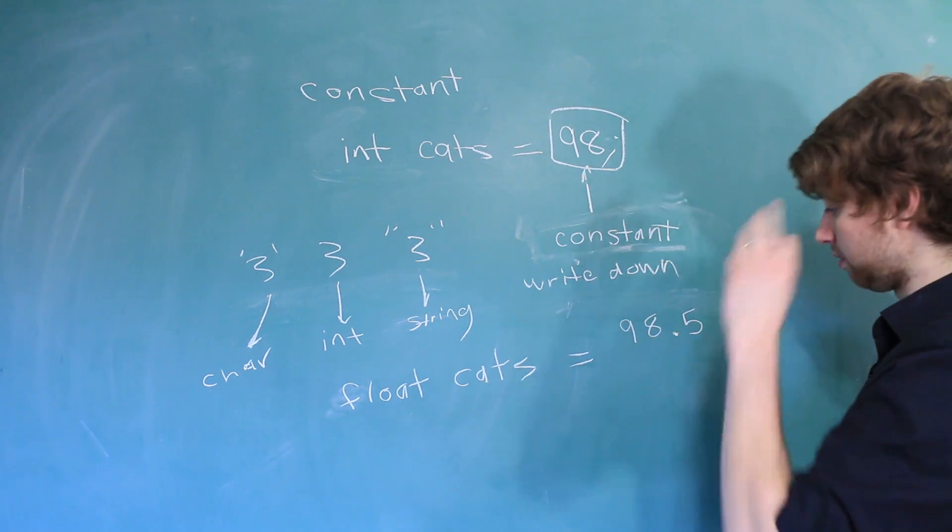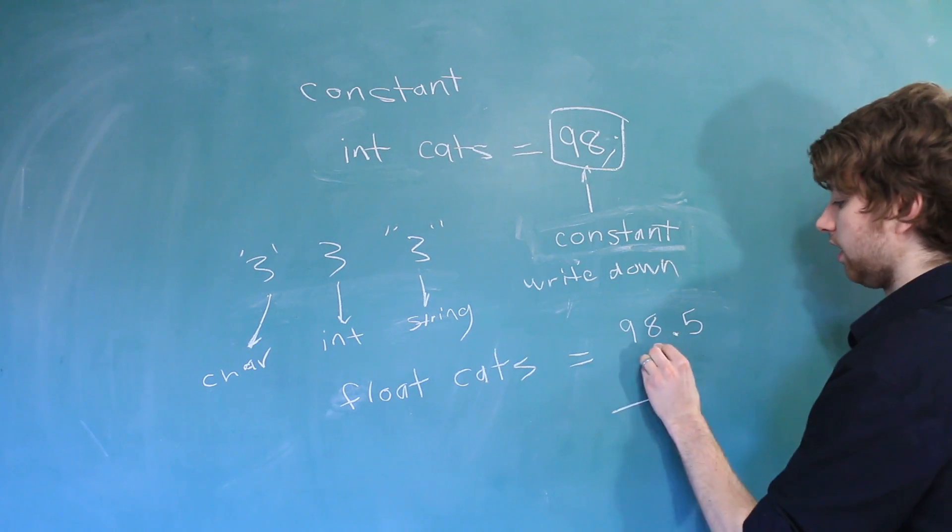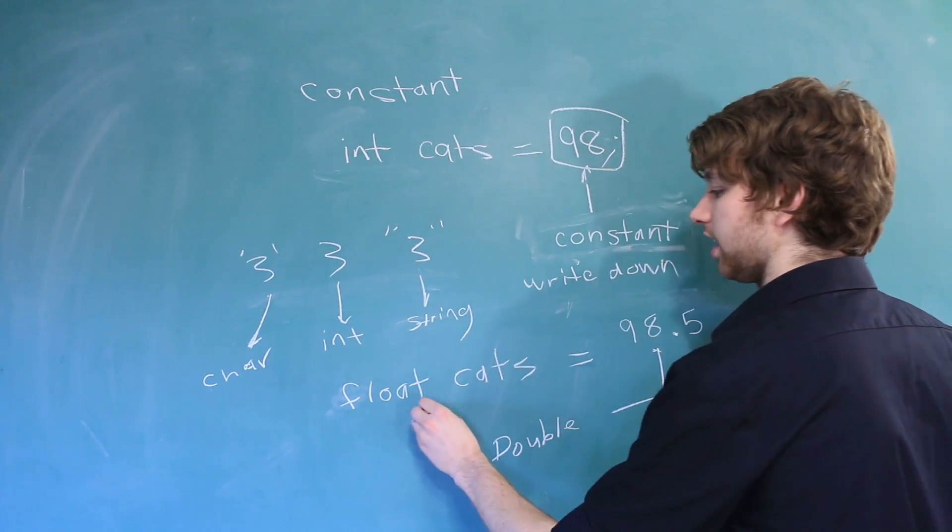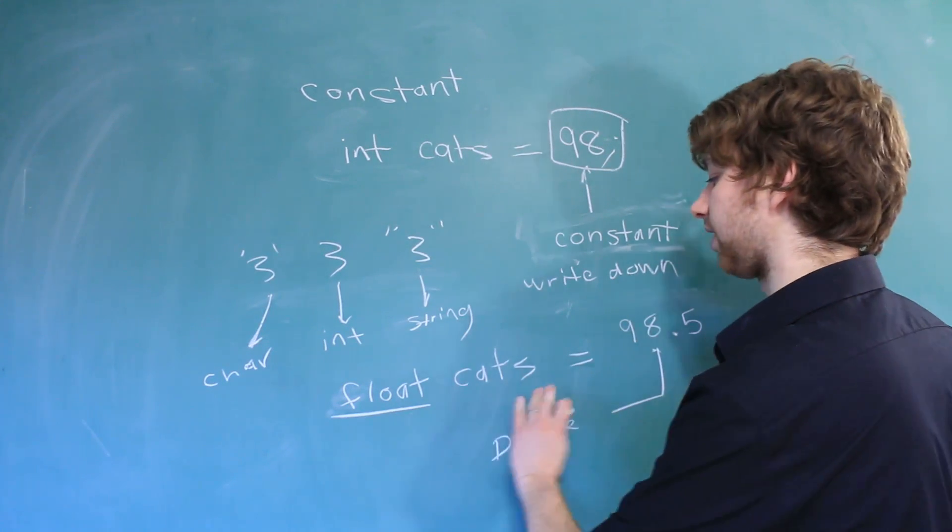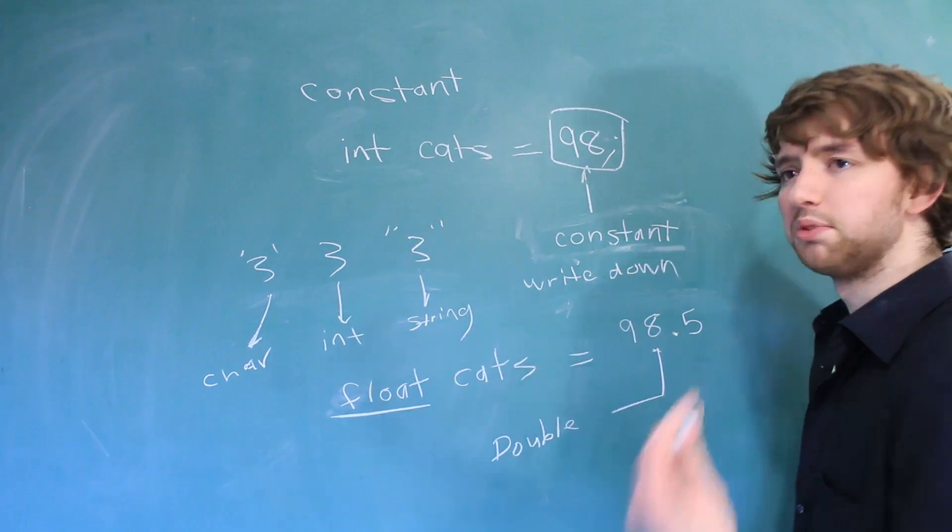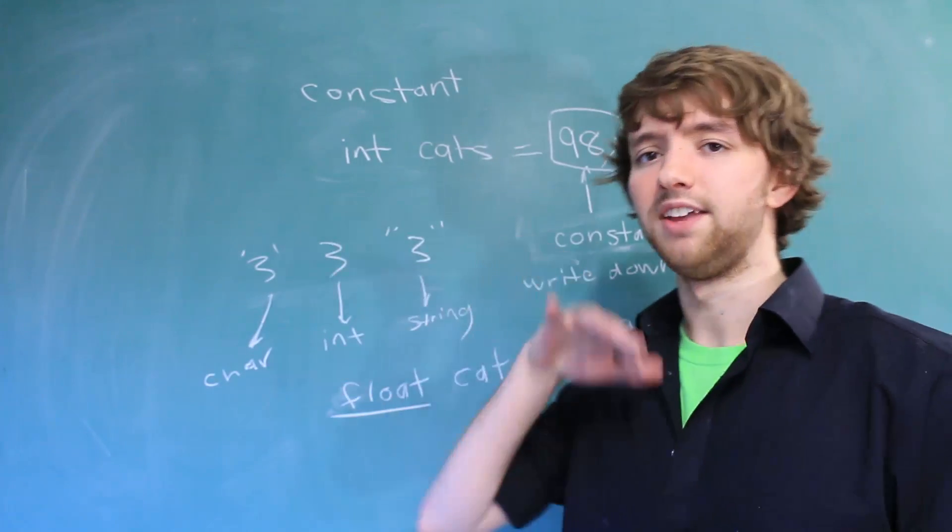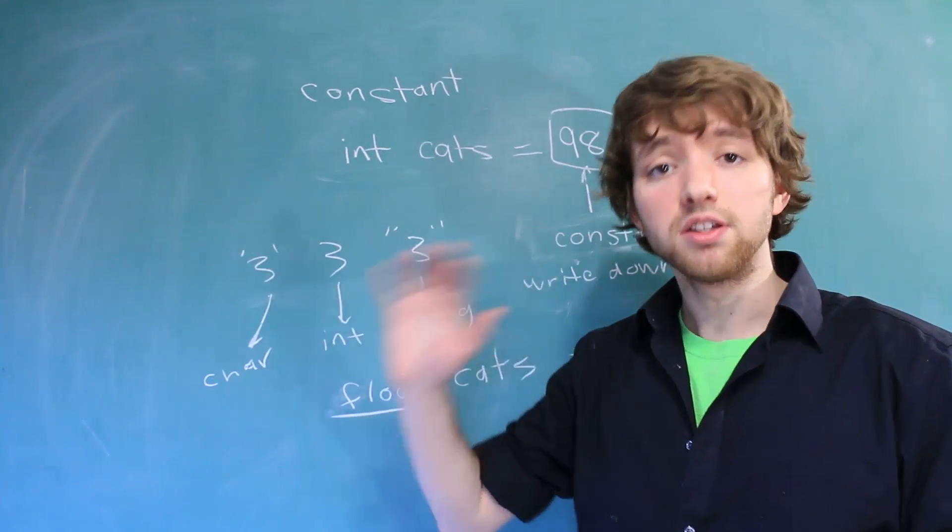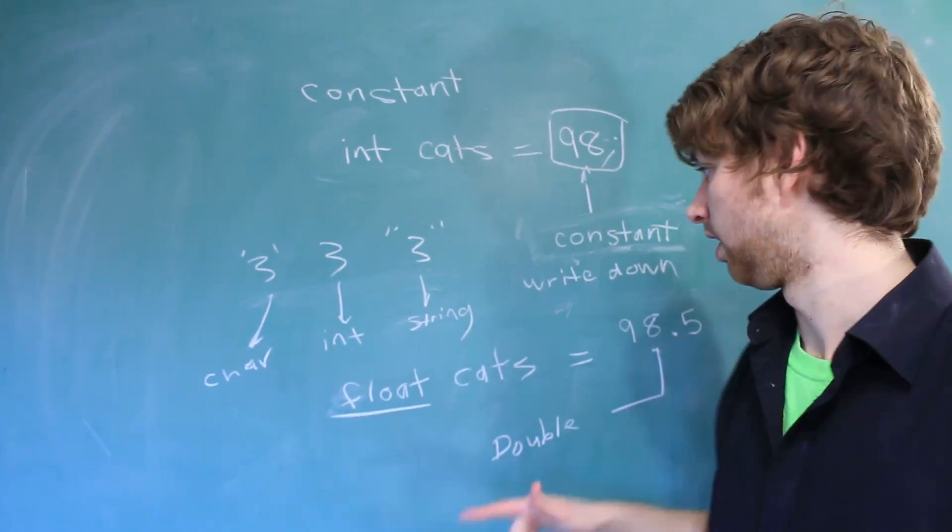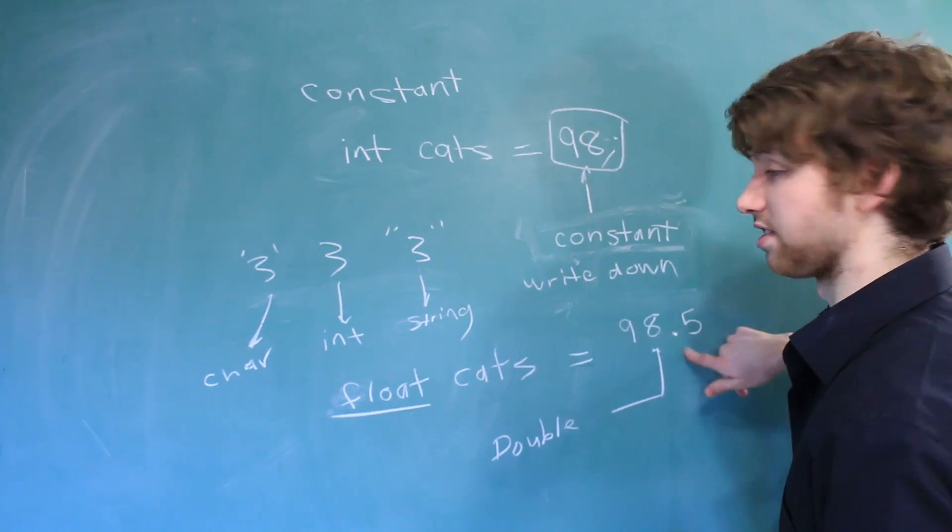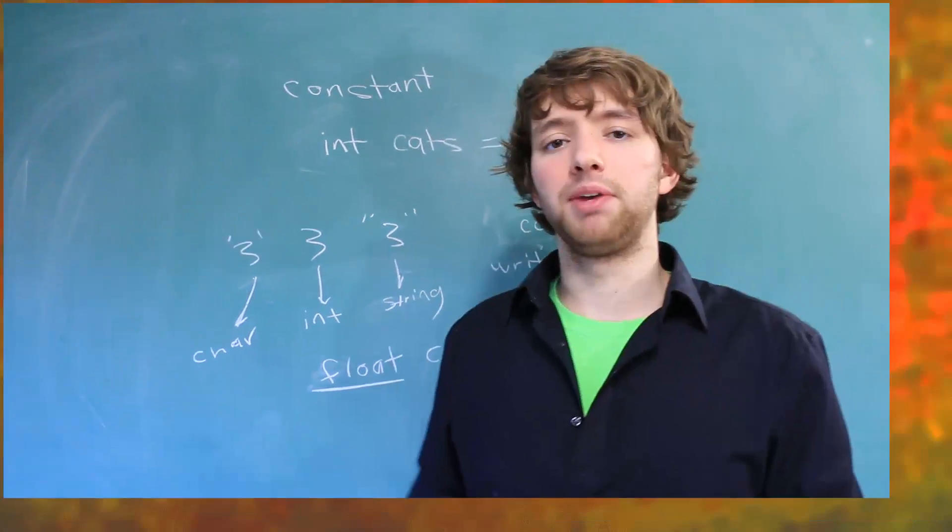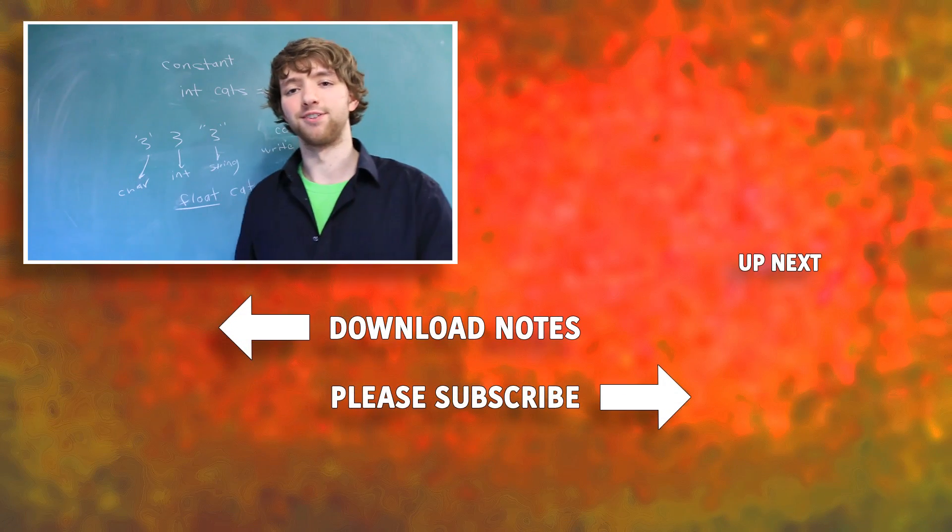Well, this brings up an interesting point because this constant here is actually a double data type. We don't really have to worry a whole lot about that because we're assigning it to a float. So we get the expected value of cats being a float data type that has the value of 98.5. But sometimes you want to be very, very specific and that might come up sometime in the road down the future. If that does come up, there are certain things you can do to be very specific on the data type of a constant. If you want to be specific and say this is a float, you can do things such as adding an F to it. Now, this is a float constant.